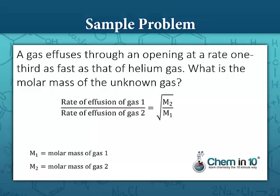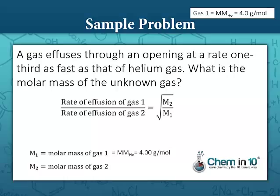Since one of my gases is helium, if I'm going to solve for the molar mass of an unknown gas, I prefer that answer to be in the numerator. So I let the unknown gas be M2, and then I let my known gas helium be M1. The molar mass of helium is approximately 4.00 grams per mole.